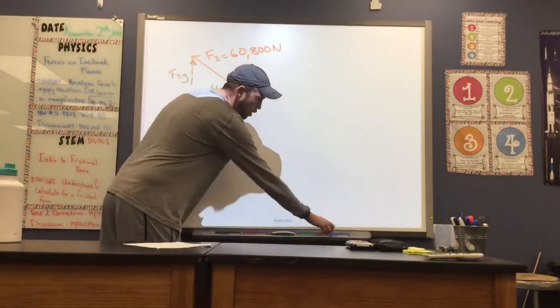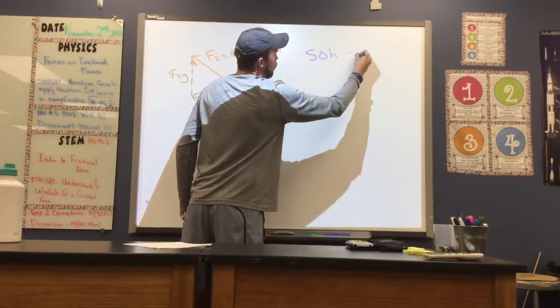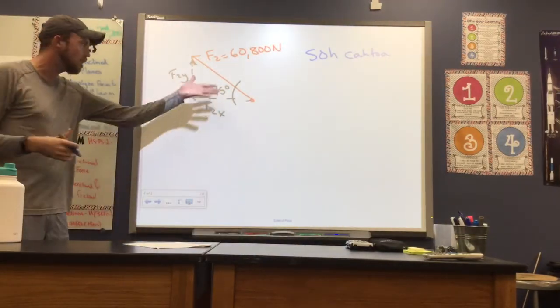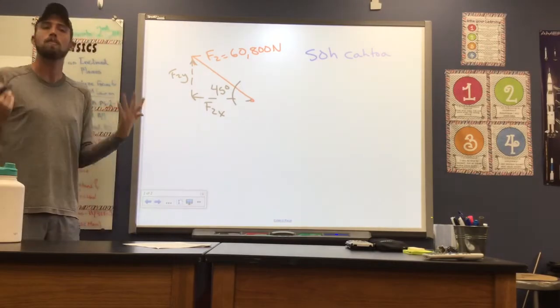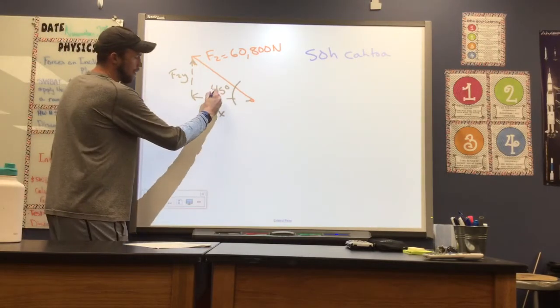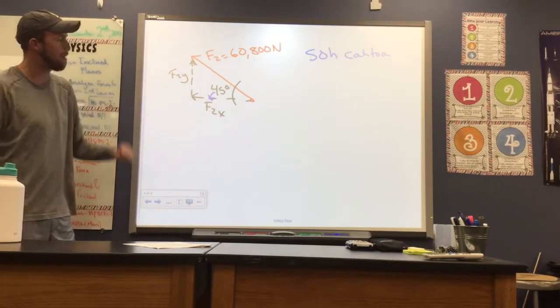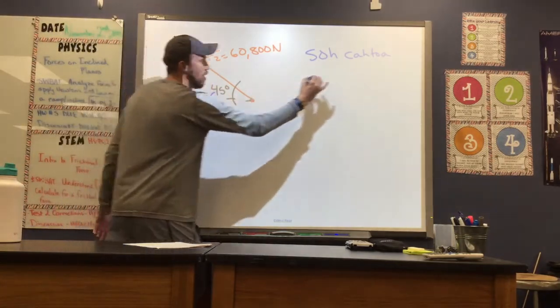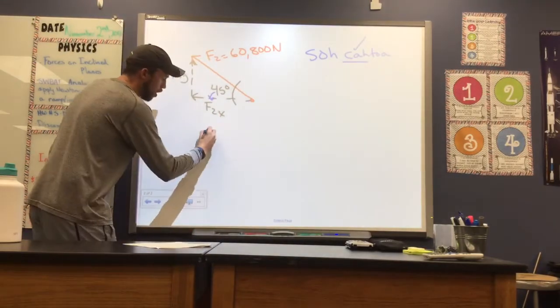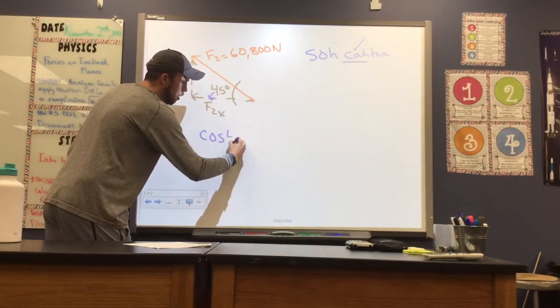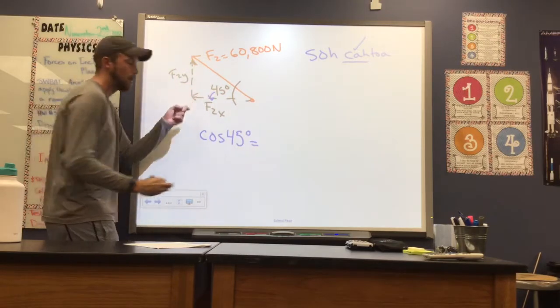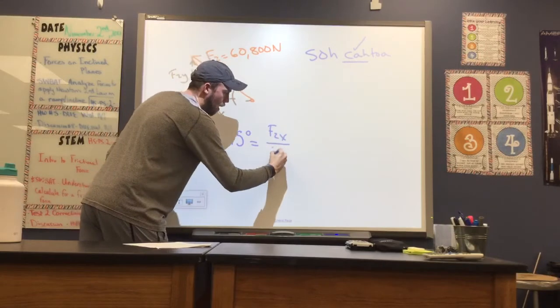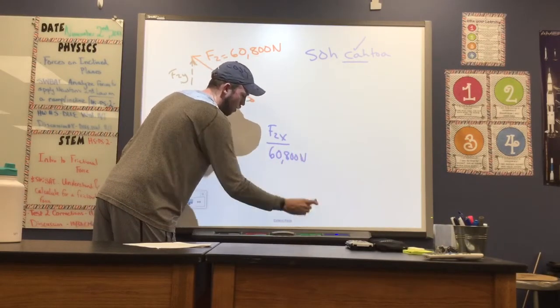So I use my acronym for trig functions, which we'll need here. SOHCAHTOA. It doesn't matter which side we choose to solve for because due to the angle that we have, they're going to be the same. So let's say I want to find my X component. To find my X component that's adjacent to my angle, I have my hypotenuse. That's going to mean I use my cosine function. So cosine of our angle, 45 degrees, will give us our X component, F2 in the X, divided by our hypotenuse, which we know is 60,800 newtons.